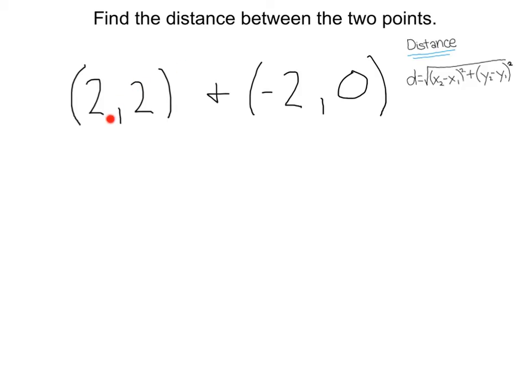Let's find the distance between these two points, 2, 2, and negative 2, 0. First, let's label these x1, y1. These points here can be x2, y2.